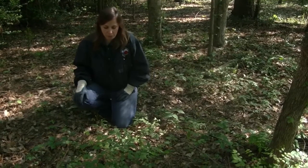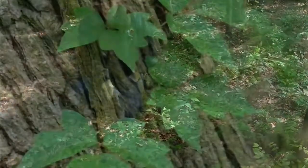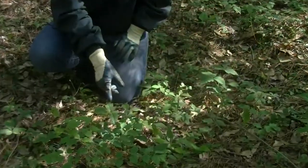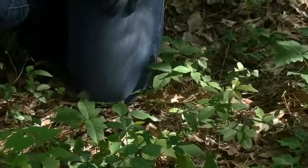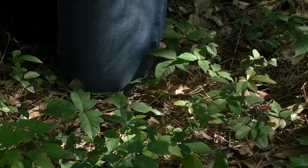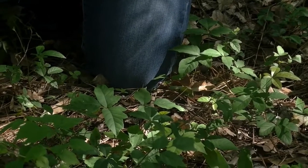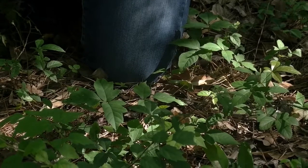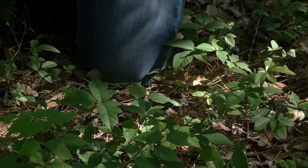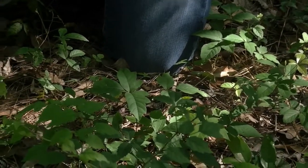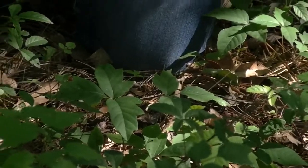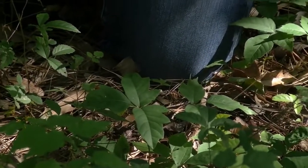The first one we'll point out is something you should avoid touching, which is why I'm protecting my hands with gloves. This plant right here is poison ivy. Now a lot of people have heard the saying 'leaves of three, let it be.' While that can be useful to remember how many leaves poison ivy has, you'll see in a minute that a lot of other plants also have three leaves. So it's important to know the characteristics to properly identify it.